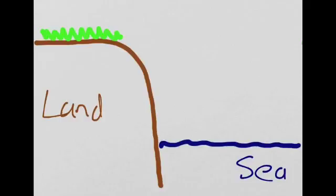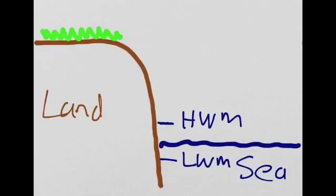First of all, the sea will attack the cliff between the high water mark and the low water mark. The sea must be in contact with the cliff for erosion to take place. Anywhere in this section here, there will be no erosion because that is above the high water mark.